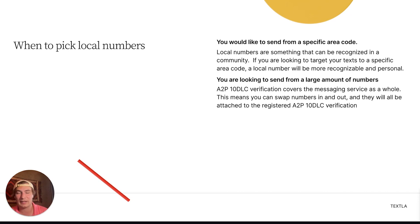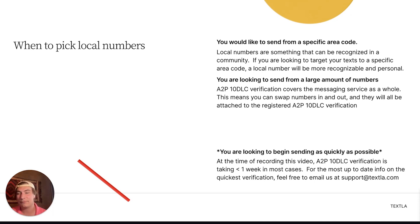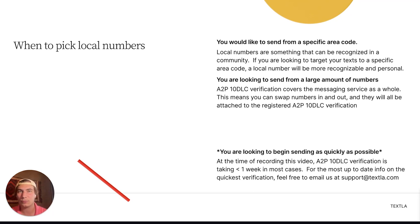Toll-free verification, by contrast, only applies to specific numbers — so if you get 100 numbers, you have to submit 100 individual verifications. Also, time-sensitive as of this recording: if you're looking to begin sending as quickly as possible, A2P is the way to go, taking less than a week in most cases, whereas toll-free is about three to four weeks. Since this can change, reach out to us at support@texla.com for the most up-to-date info on which is quicker.